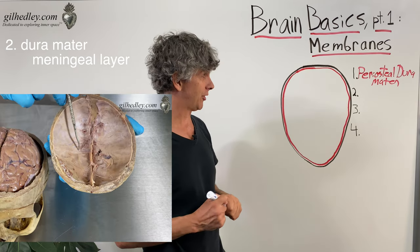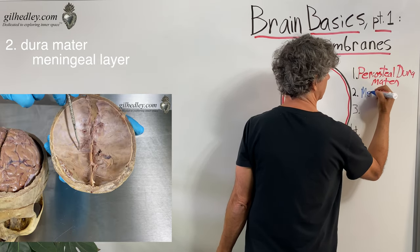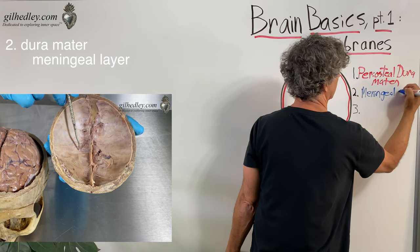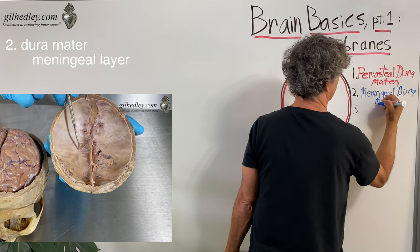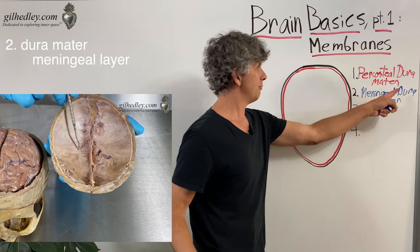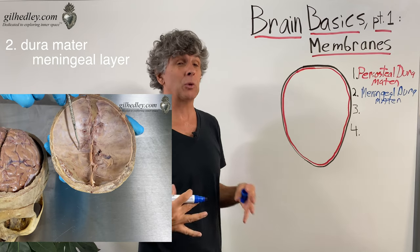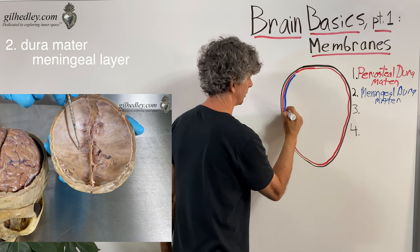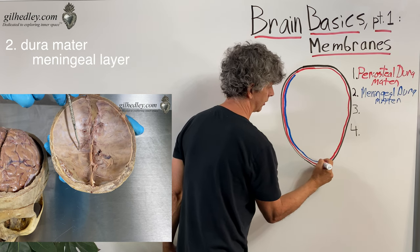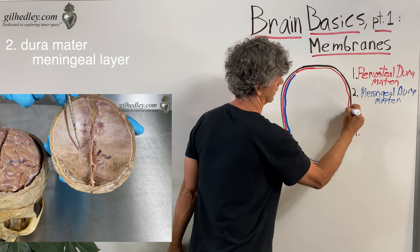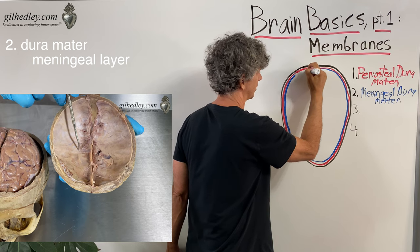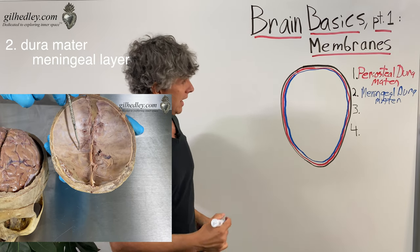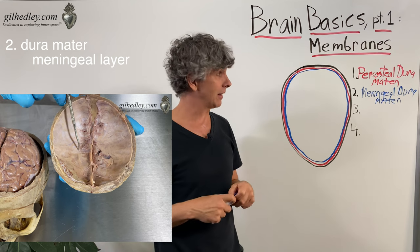That second layer is called the meningeal layer of the dura — the membrane layer of the membrane — the meningeal dura mater. It's the tough matter that forms one more layer and is in contact with the other meninges, particularly the arachnoid. These two layers are adherent to each other, and the whole structure is adherent to the skull, so it's all kind of stuck to itself — and it's supposed to be.